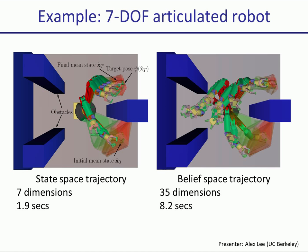In addition, we also tried the algorithm for higher degrees of freedom articulated robots. Similar to the previous example, we want the end effector to go from the bottom right to the target pose at the top right. The robot has better sensing of the end effector position on the left side. Notice that in the state-space trajectory the robot ignores any sensor measurements, but in the belief-space trajectory the robot end effector first goes to the left to sense itself better, and then goes to the right. The belief-space plan is a 35-dimensional problem, and our implementation took about 8 seconds to compute a solution.